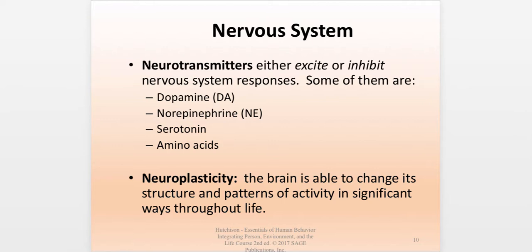There are many neurotransmitters in the body, but the four main ones mentioned in the text are dopamine, norepinephrine, serotonin, and amino acids. Dopamine influences emotional behavior and cognition and has something to do with the pleasure centers in the brain. Norepinephrine is secreted by the adrenal glands, influences emotional behavior and alertness, and plays a role in the regulation of anxiety and tension. These terms come up frequently in relation to psychiatric or psychological disorders.